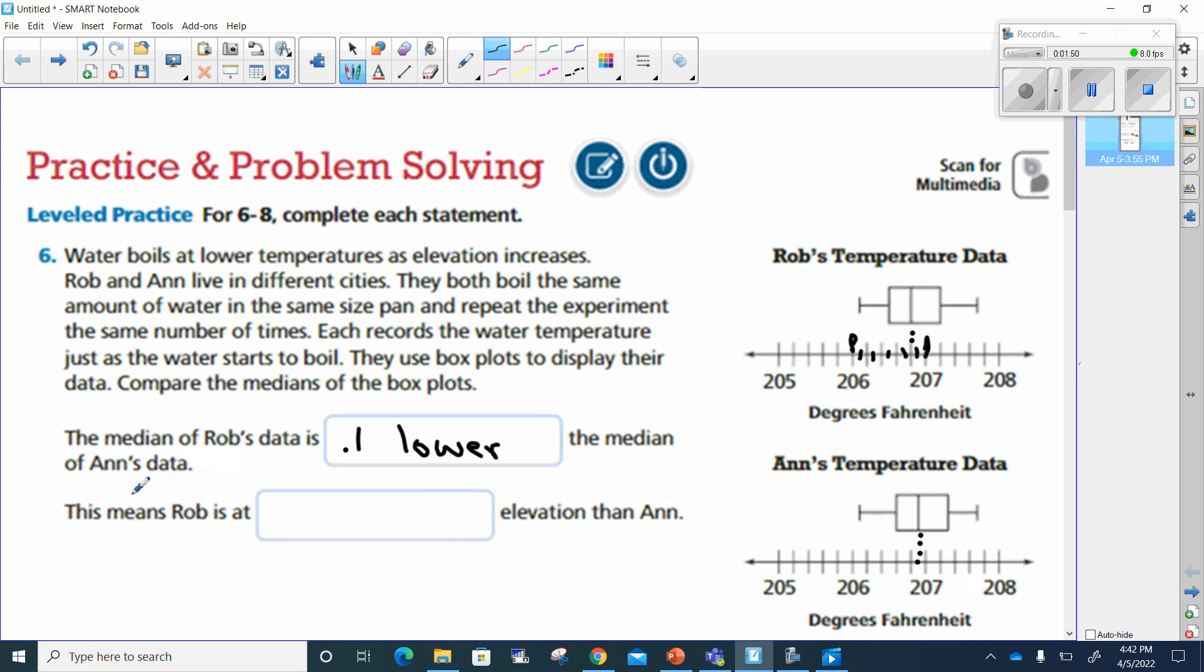Now it says this means that Rob is at blank elevation to Anna. Well, it says water boils at lower temperature as elevation increases. Okay, so that means if Anna is taking longer, this is degrees in Fahrenheit. So if hers is boiling at a higher degree, it starts boiling at a higher degree, and water boils at lower temperature as elevation increases. And since his is at a lower temperature, that means Rob is at a higher elevation.